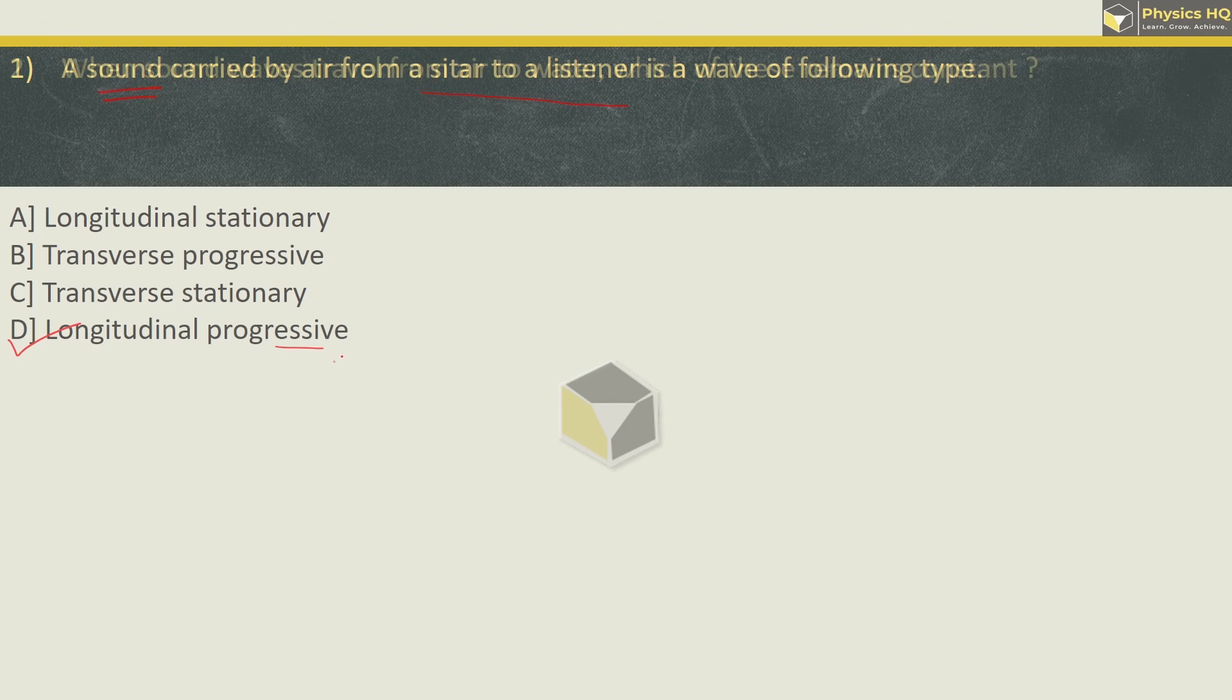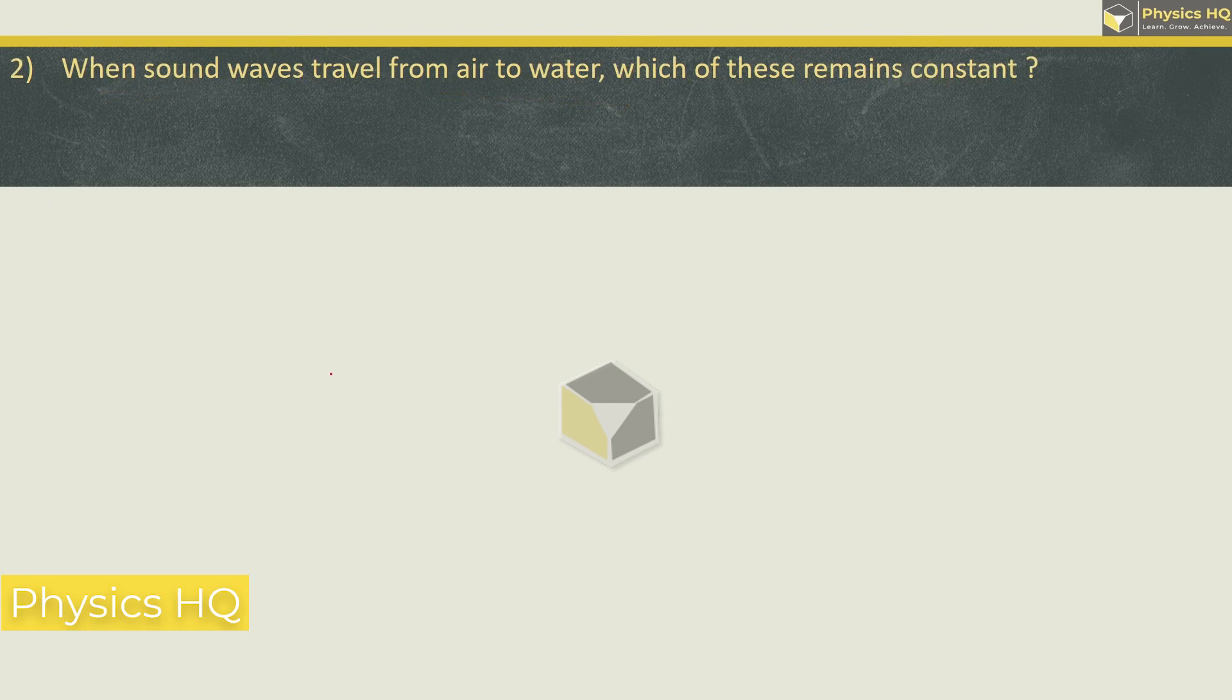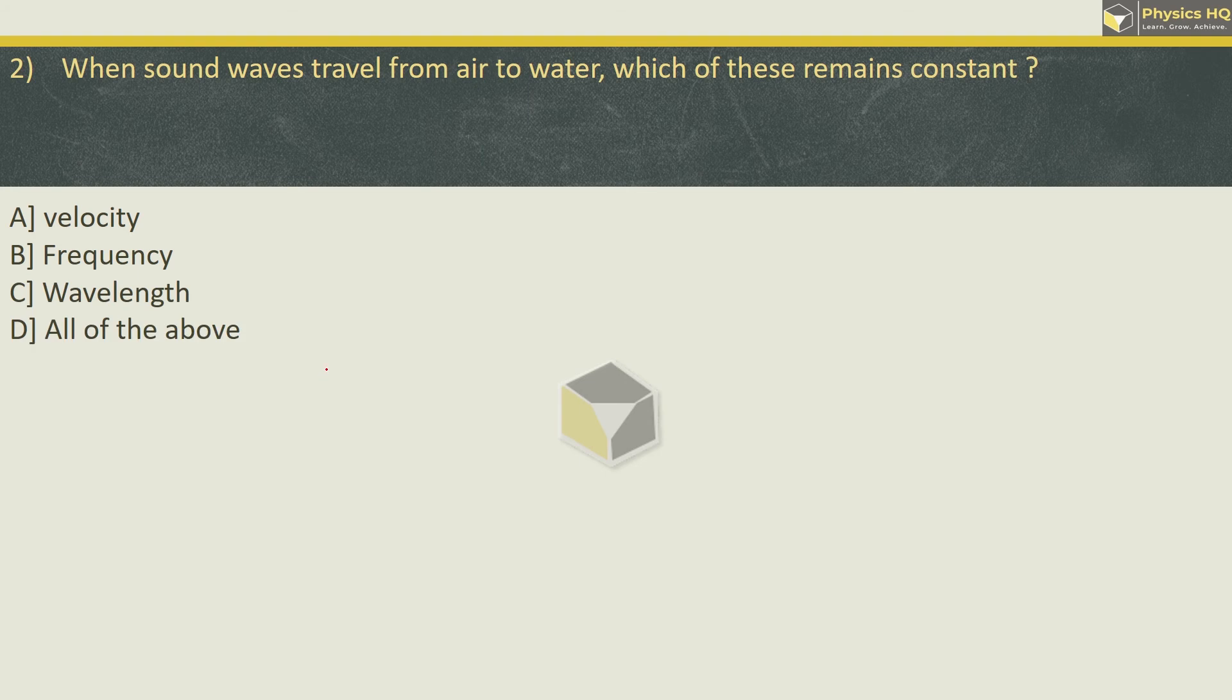Next MCQ. When sound waves travel from air to water, which of these remains constant? Velocity, Frequency, Wavelength, or all of the above. Now remember this, whenever wave travels from one medium to another, the frequency remains same or constant. The other velocity, wavelength, amplitude, everything changes.